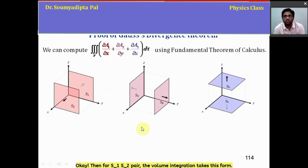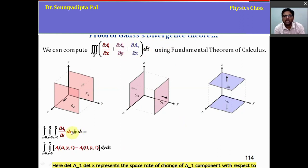Then for S1, S2 pair, the volume integration takes this form. Here del A1 del X represents the space rate of change of A1 component with respect to X. And del A1 del X dX gives us the differential of A1 keeping Y and Z fixed.